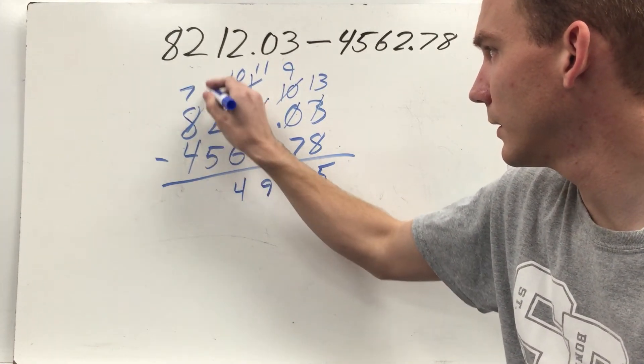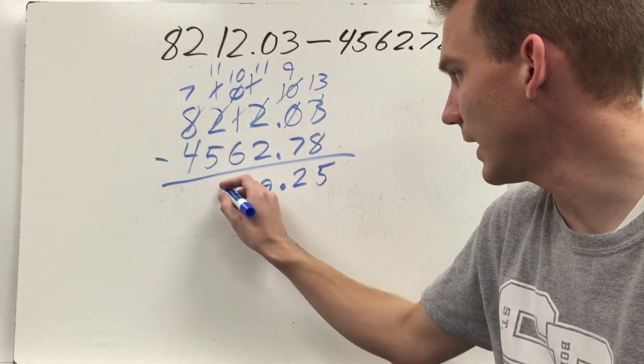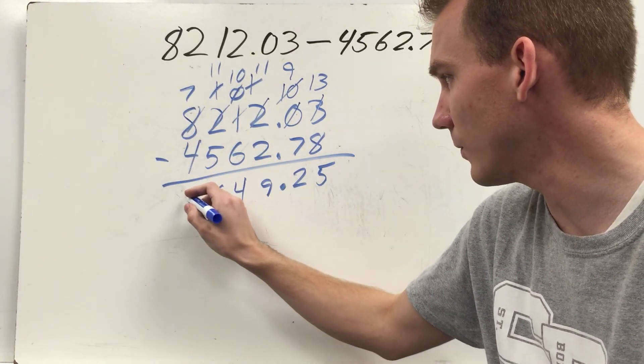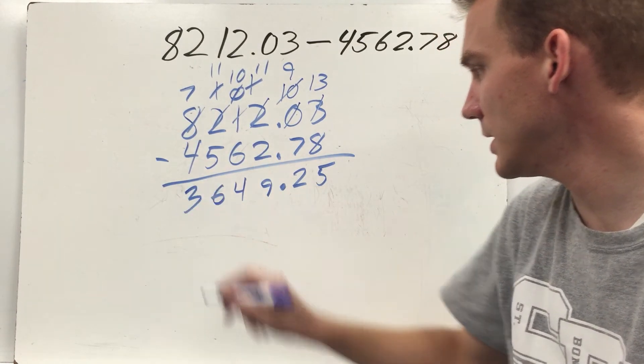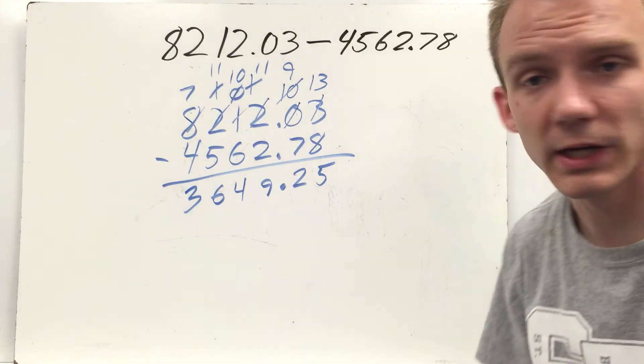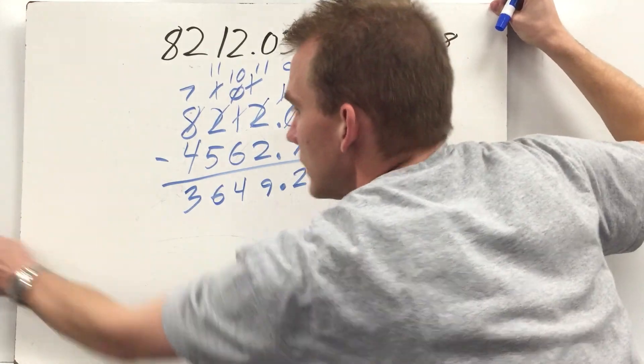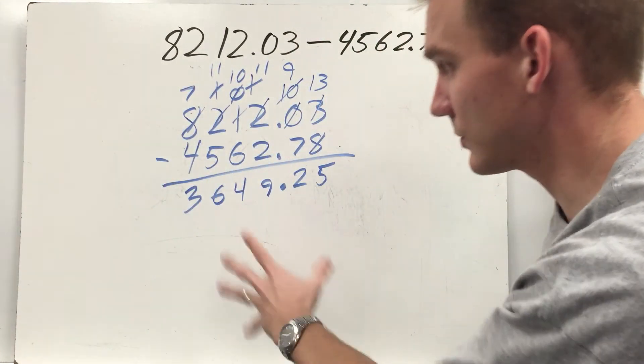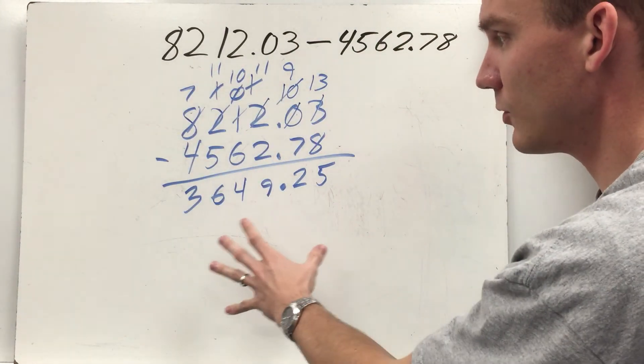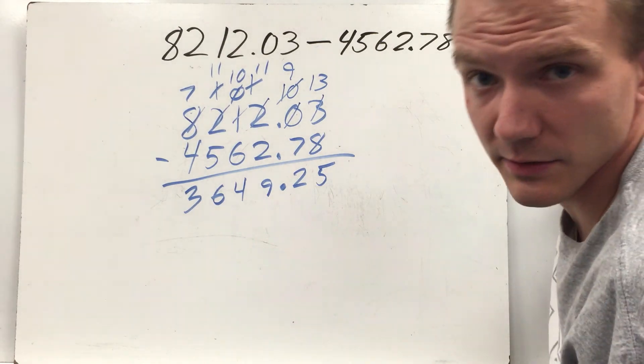Eleven minus five is six. Seven minus four is three. Three thousand, six hundred, forty-nine and twenty-five hundredths would be my difference. This is about as hard as it's going to get with subtracting decimals in terms of the amount of regrouping, the size of the numbers, and the size of your difference.